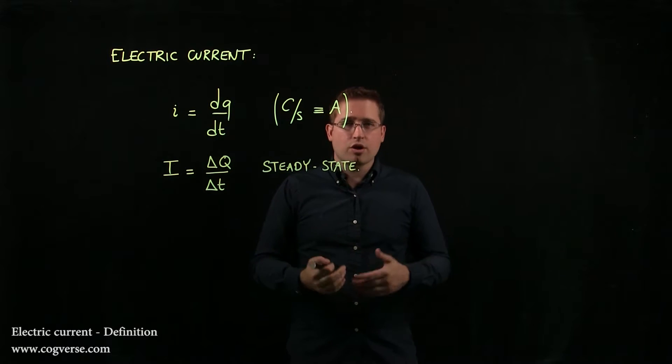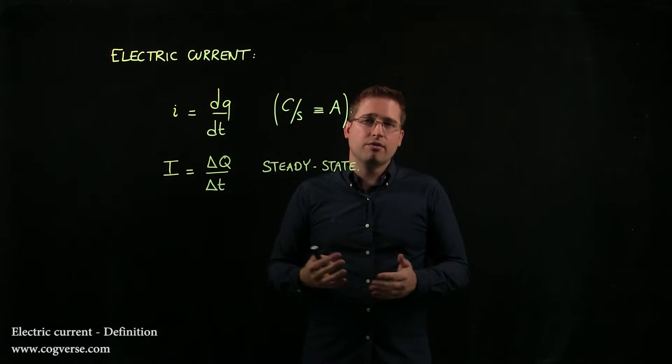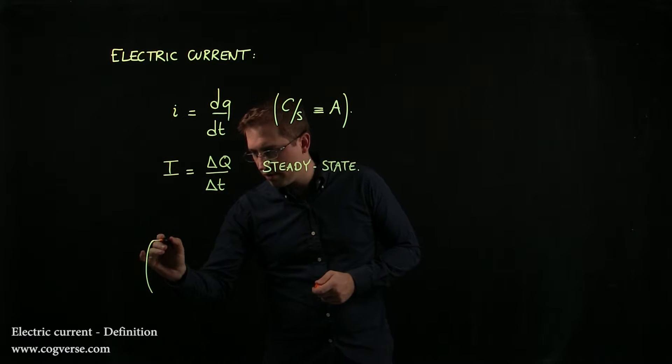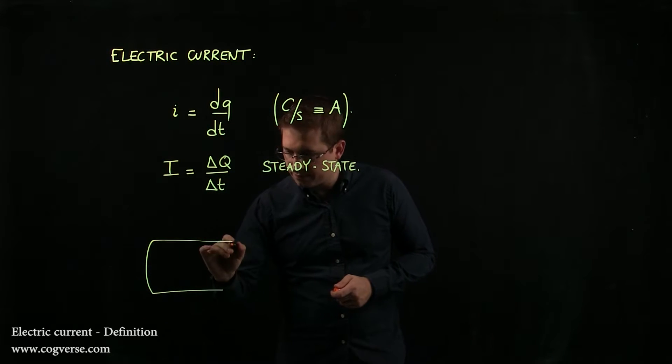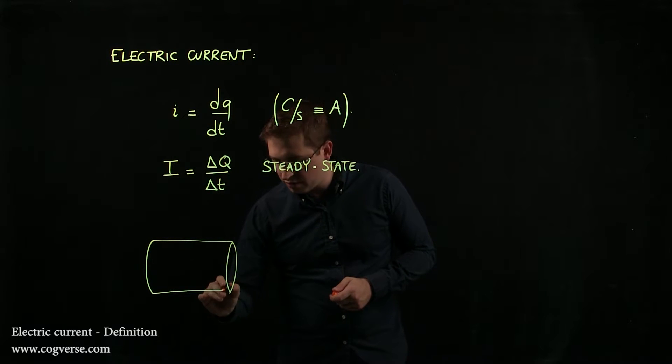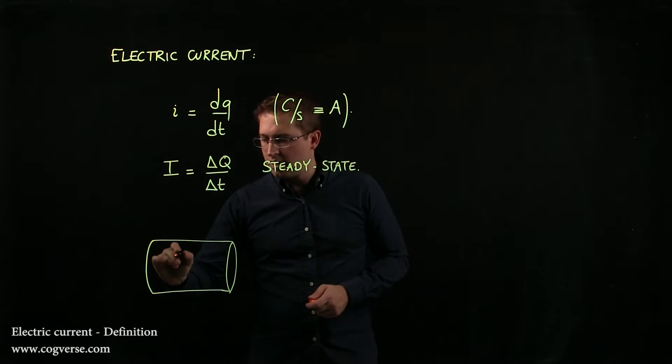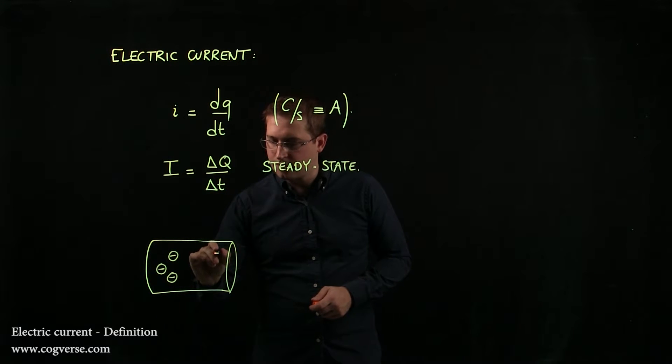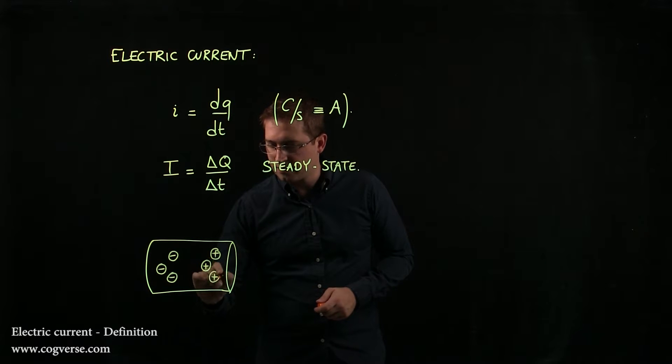Now, to get charge to move, we actually apply a voltage across a conductor. And if you remember, we said that a conductor has a bunch of free charge, as in charges that are free to move if we apply a voltage to this conductor.